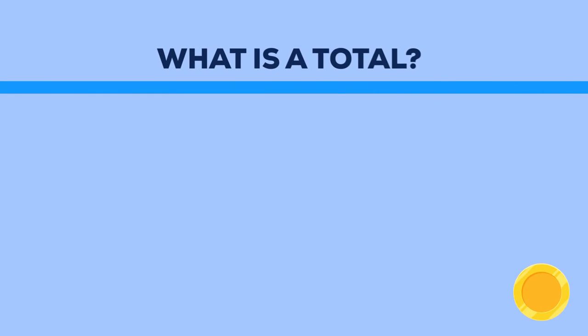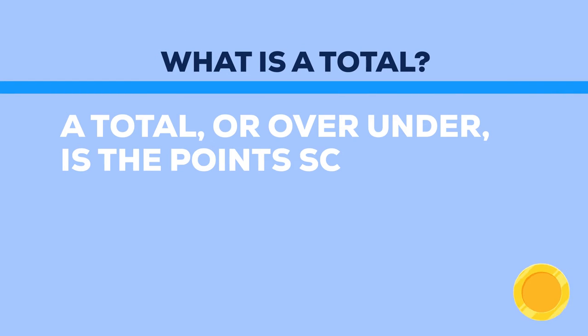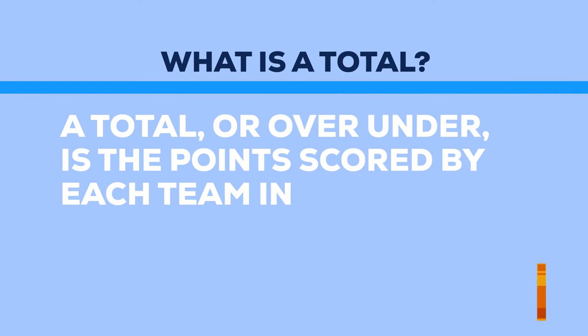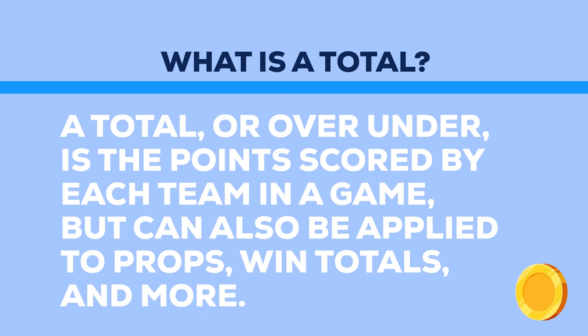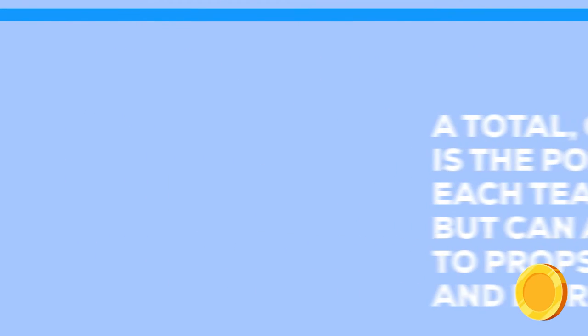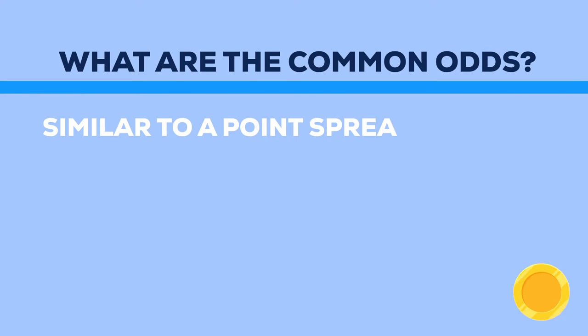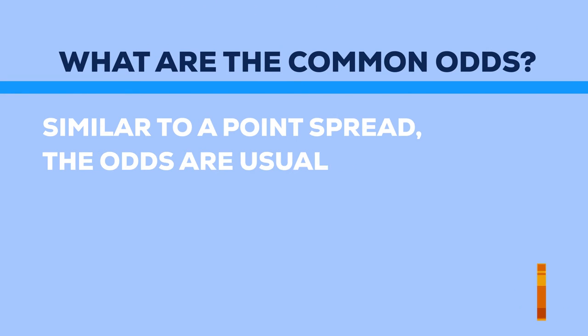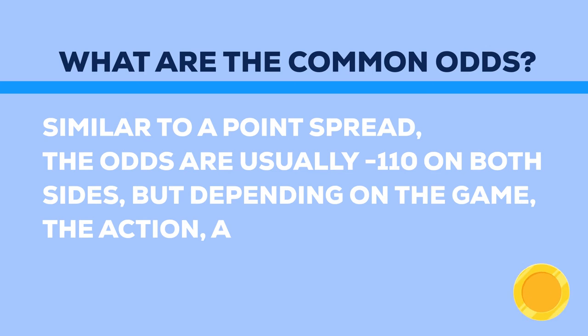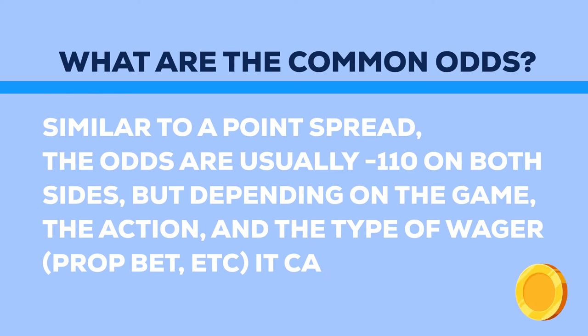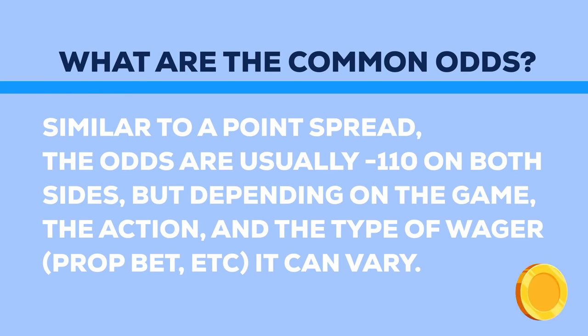So let's recap. What is a total? A total, or over-under, is the points scored by each team in a game, but can also be applied to props, win totals, and more. What are the common odds? Similar to a point spread, the odds are usually minus 110 on both sides, but depending on the game, the action, and the type of wager — whether prop bet or otherwise — it can vary.